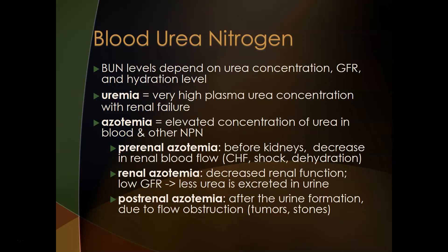Renal azotemia involves decreased renal function with a low glomerular filtration rate — less urine is produced, so less urea is excreted, and it backs up into the blood. Post-renal azotemia is a problem after the kidneys — after urine formation — usually due to an obstruction in urine flow so that urine cannot leave and waste products back up into the bloodstream. The most common causes are tumors and stones.